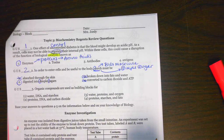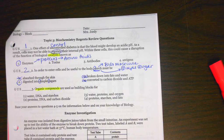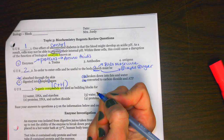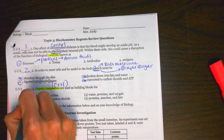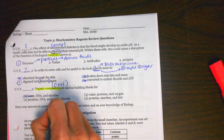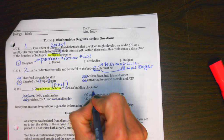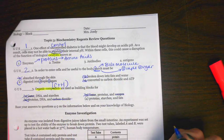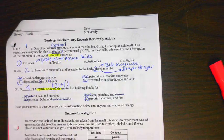Next one says, organic compounds are used as building blocks for. We have to remember, organic compounds have both carbon and hydrogen in it. Number 1 says water, DNA, and starches. Water is going to be inorganic, so it can't be that. Number 2 says proteins, DNA, and carbon dioxide. Carbon dioxide is inorganic. Number 3 says water, proteins, and oxygen. Water and oxygen are both inorganic. Last one says proteins, starches, and fats, and those are all examples of organic molecules.